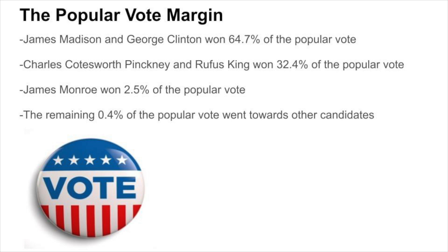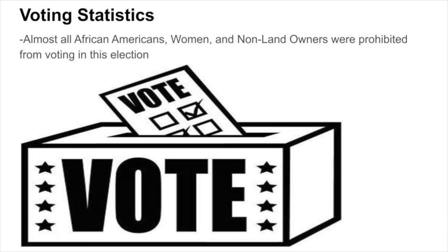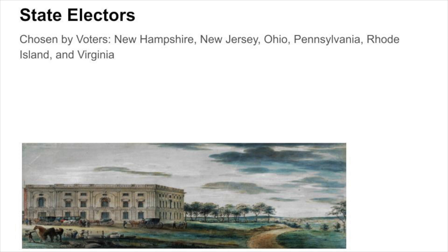With only 4.36% of the population voting, a lot of the country was prohibited from voting, including almost all African Americans, women, and non-landowners. At the same time, only 10 of the 17 states selected electors by popular vote.